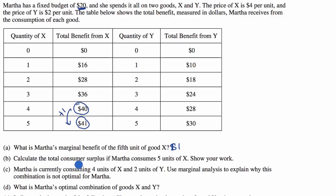Calculate the total consumer surplus if Martha consumes five units of X. Show your work. The consumer surplus is the benefit minus the cost, which is going to be equal to, when she has five units of X, her total benefit is $41. And then what's her cost of five units of X? X costs $4 per unit, so five times four is $20, so her cost is $20. Her consumer surplus is going to be equal to $21.